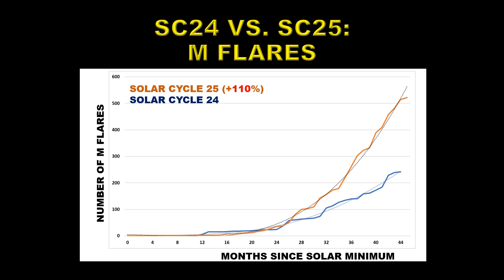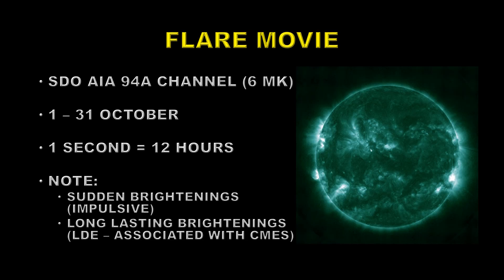As I said, there were only 7 M flares in the last month, and you can see that the rate of M flares has dropped off quite significantly — very similar to the rate we had in Solar Cycle 24 at the same time — but it's still outpacing Solar Cycle 24 by 110%.